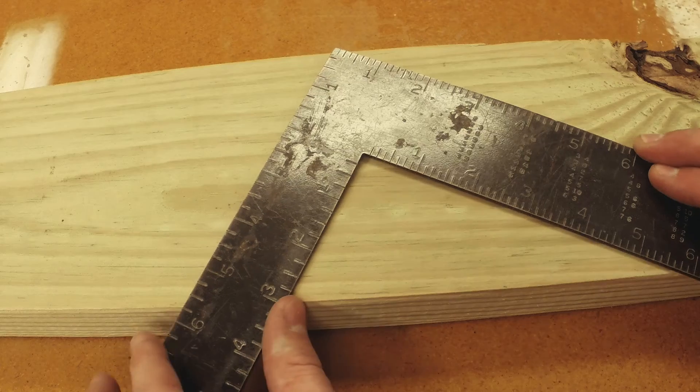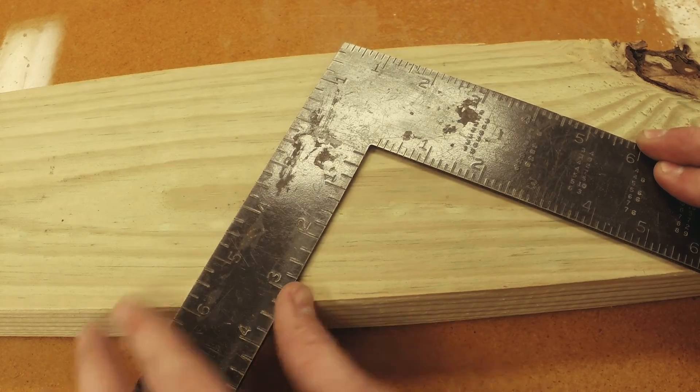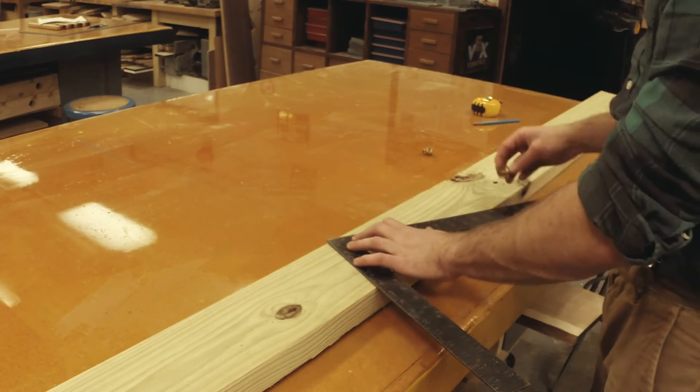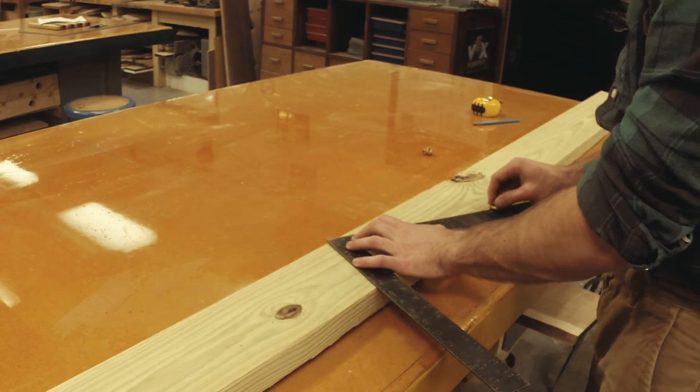I line the square up so that the 6 inch mark on the tongue and the 12 inch mark on the blade are both lined up with the edge of the board. Now I can fasten my stair gauges so they act as stoppers, keeping my rise and run measurements on the edge of the board.